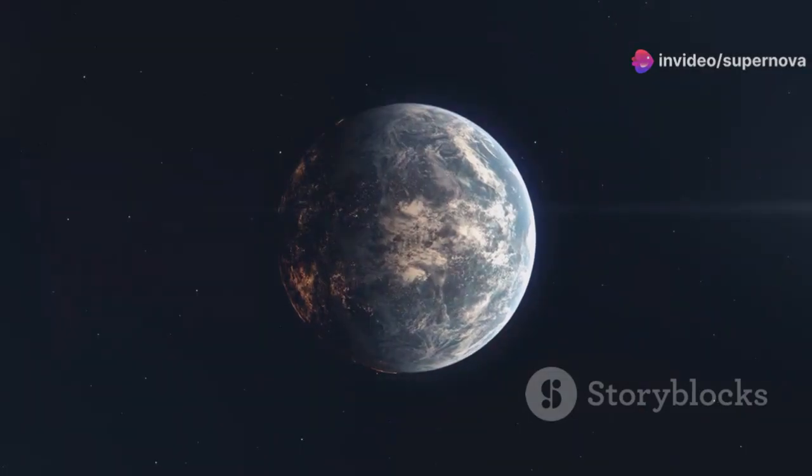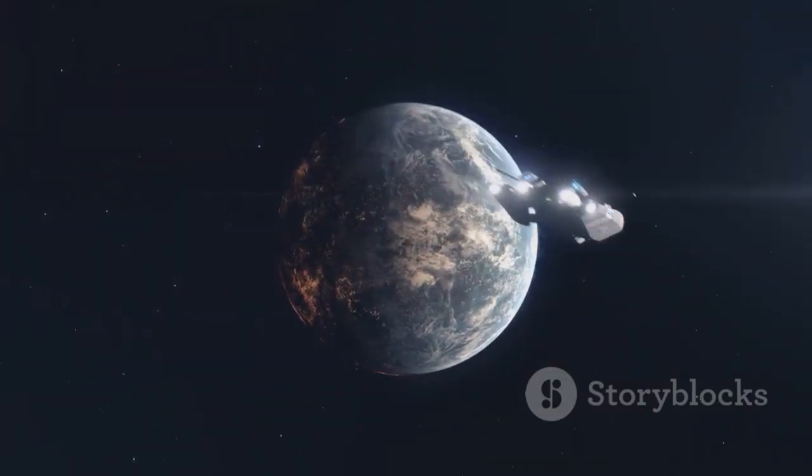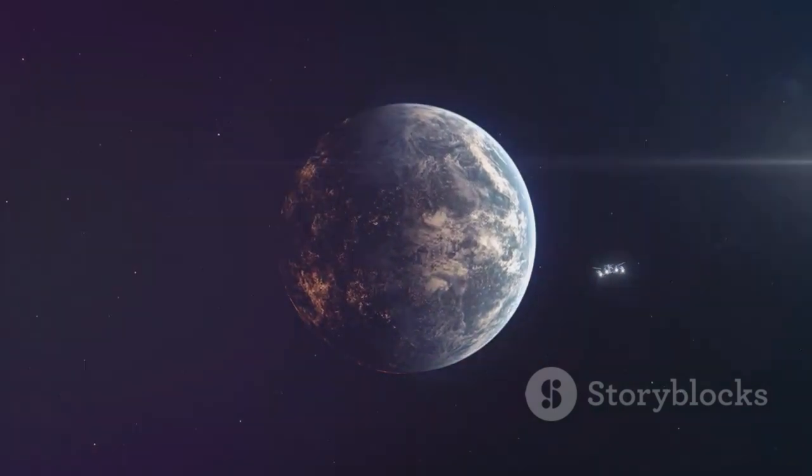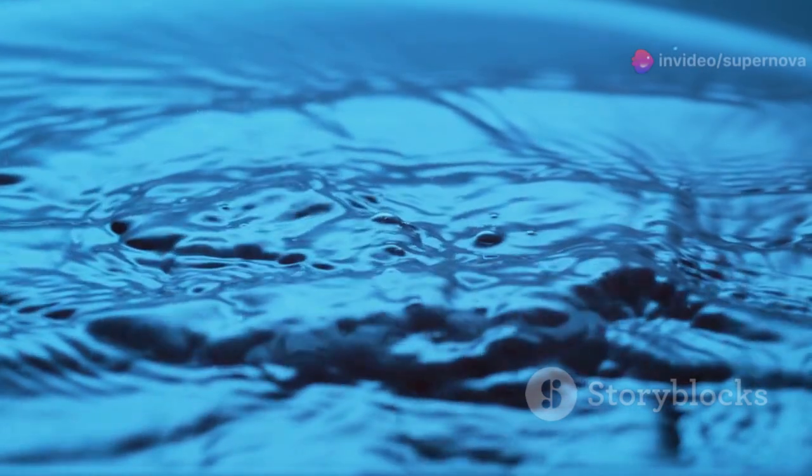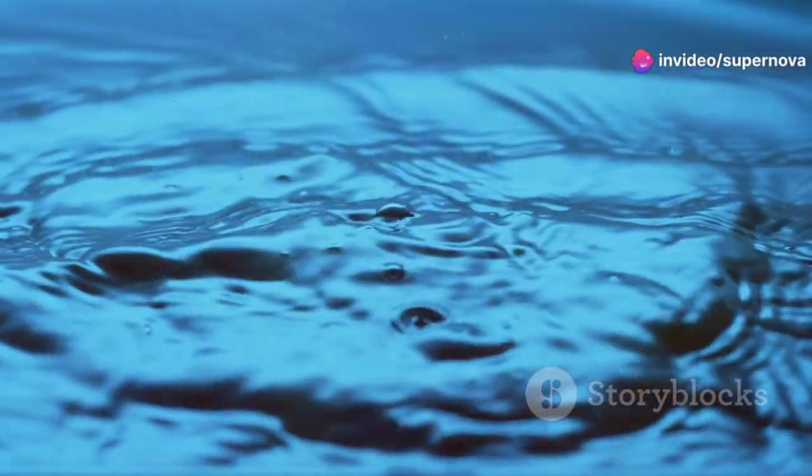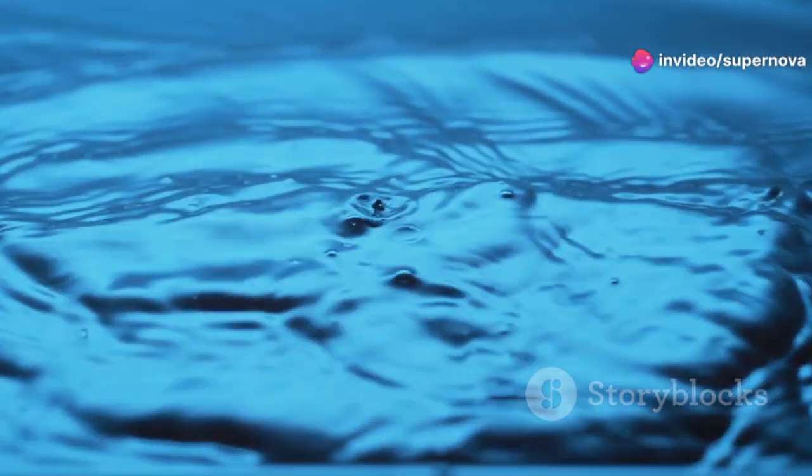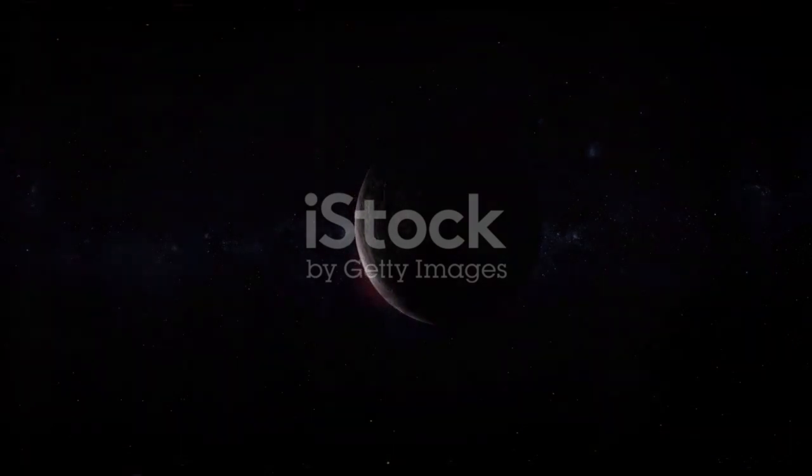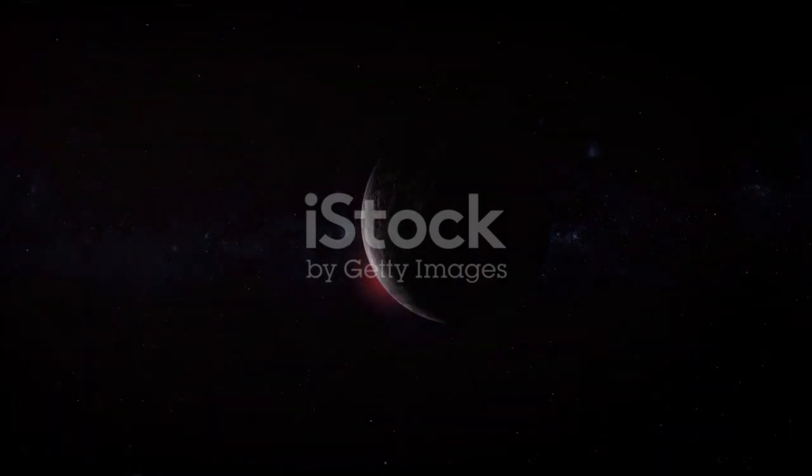The habitable zone is the region around a star where temperatures are just right for liquid water to exist on the surface of a planet, a crucial ingredient for life. This is important because water is essential for life as we know it, serving as a solvent for biochemical reactions. Proxima b lies within this sweet spot, making it a prime candidate for the search for extraterrestrial life.